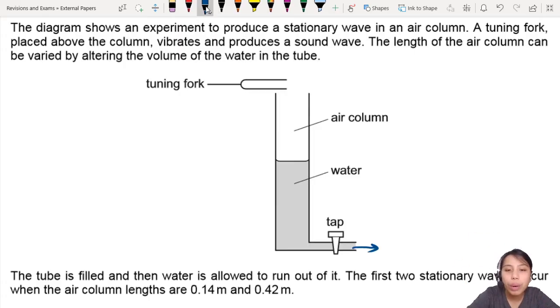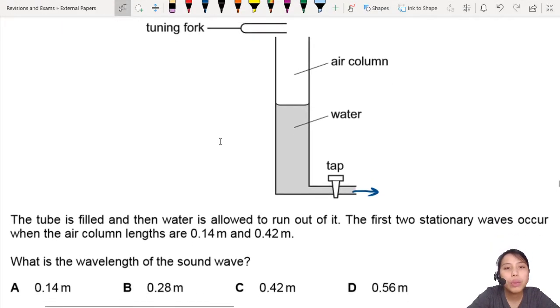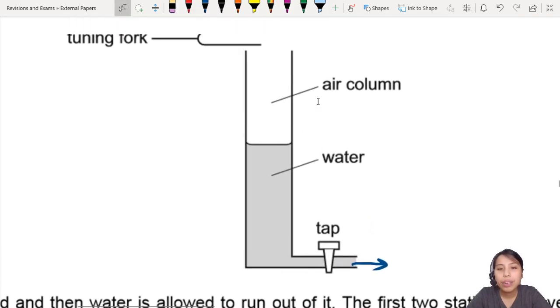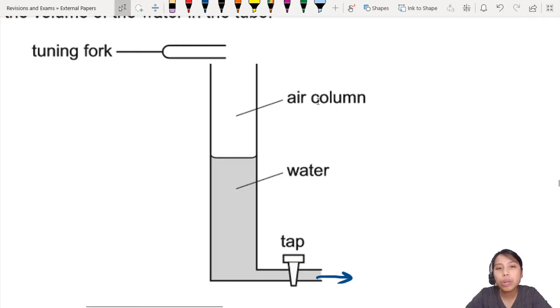The tube is filled with water, then allowed to run out of it. The first two stationary waves occur when the air column is 0.14 and 0.42. Now what does that mean? If you think about it, let's look at this thing. When you have the water drop to a certain level,